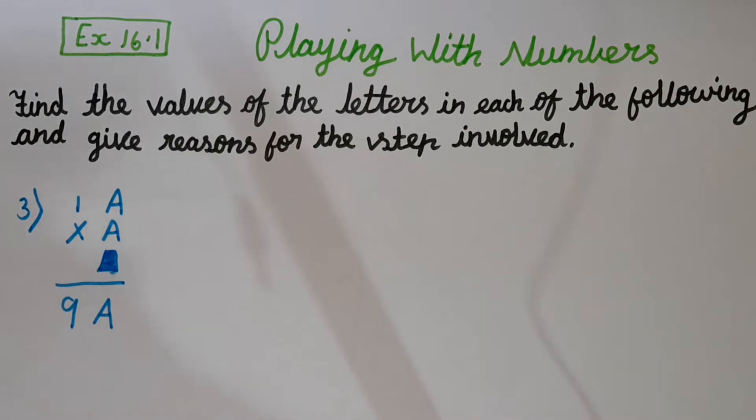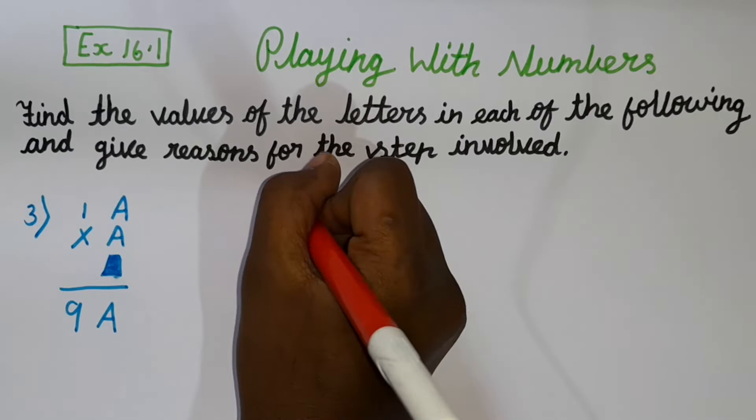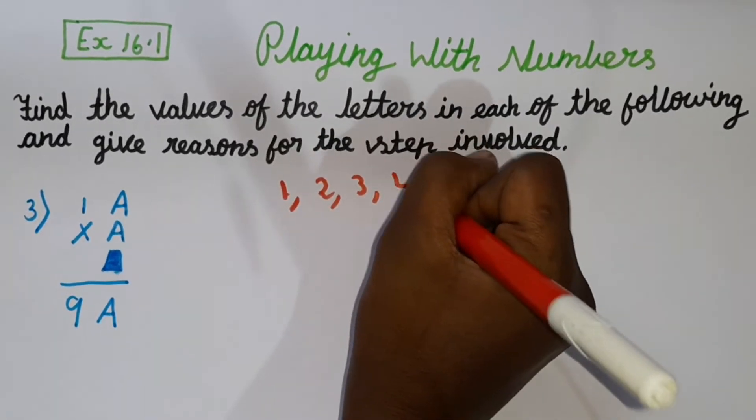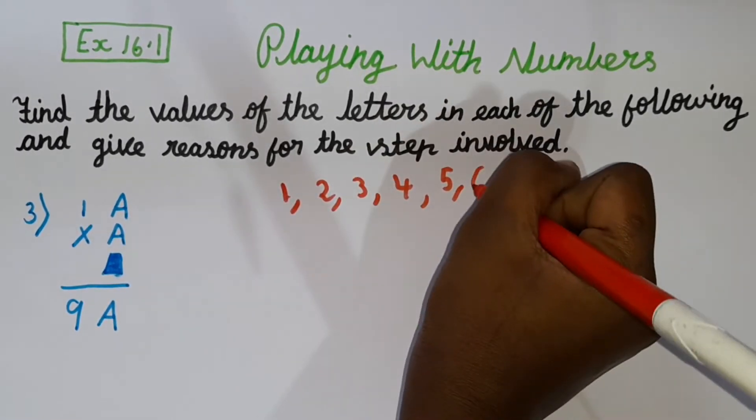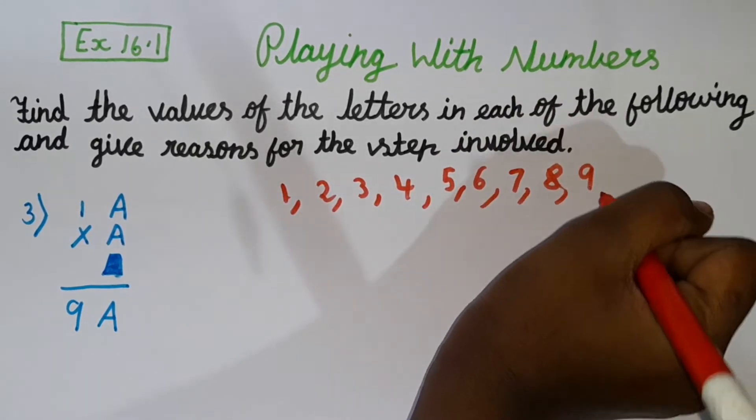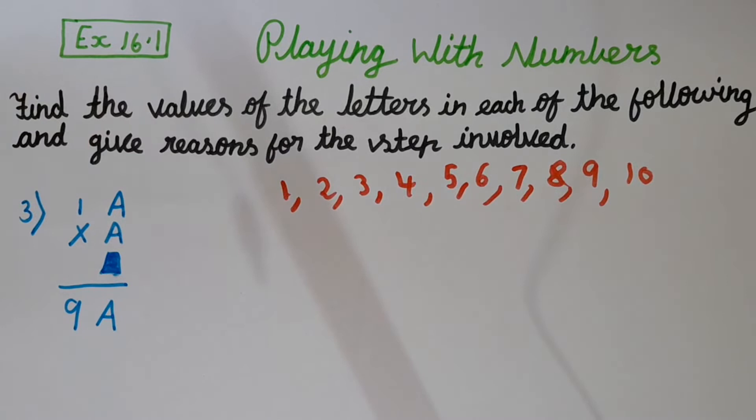First of all, in multiplication, to find the value of a letter, it's a little hard. But when you solve, when you get the number, it's going to be really easy. So first of all, to find the number, we should write 1, 2, 3, 4, 5, 6, 7, 8, 9 and 10. Now I have written 1 to 10 because we are going to multiply it with every number.